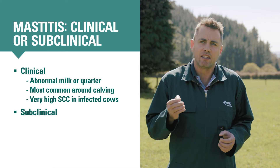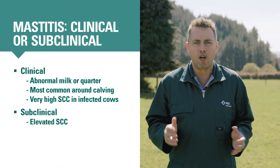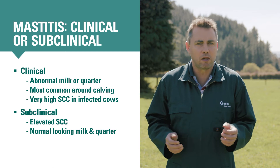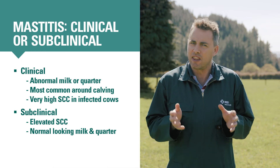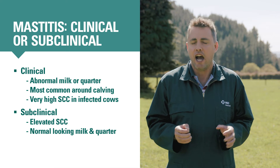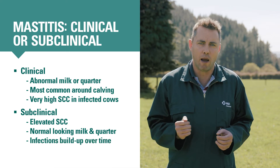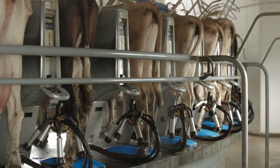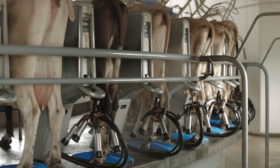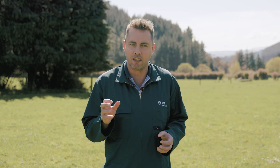Subclinical mastitis is when cows have high somatic cell counts but their milk and quarters look normal. Subclinical mastitis usually causes lower individual cow somatic cell counts than clinical mastitis. But this can easily go undiagnosed and the numbers of infected cows can build up over time, resulting in a significant milk quality problem. It is often caused by contagious bacteria such as Staph aureus, which get moved around from cow to cow during milking. For an individual cow, subclinical mastitis doesn't have a seasonal pattern like clinical mastitis, but on a herd level it is more of a concern late in the season as production drops and more cows become infected.